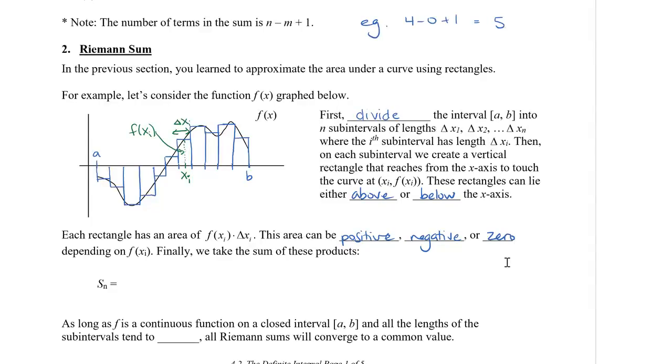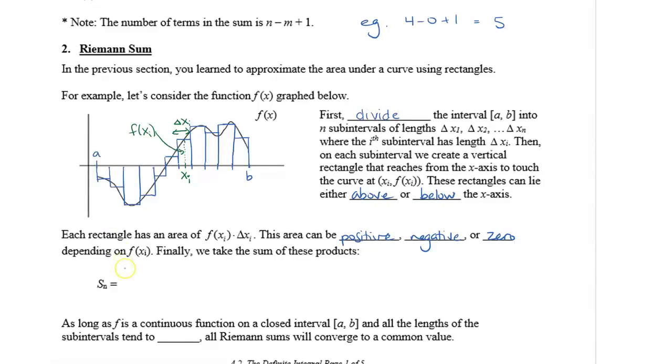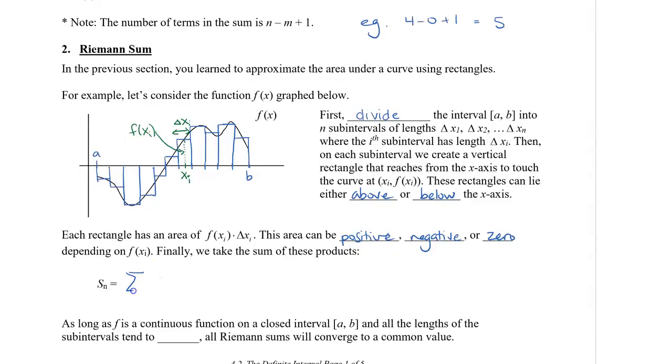Finally, what we're going to do is to take the sum of all of these products. So we're going to use our shortened notation. We're going to use the sigma. And we're going to say that the first rectangle is i equals 1. And we want to go all the way to the n-th rectangle. So we're going to take the xi-th rectangle. And the height will be f of xi. So that will be the height. And then we're going to times that by delta xi, which is the width of the rectangle. So as long as f is a continuous function on a closed interval from a to b, and all the lengths of the subintervals tend to zero, then a Riemann sum will converge to a common value.